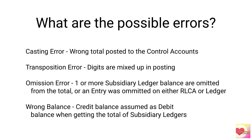Next is omission error, where one or more subsidiary ledger balances are omitted from the total, or an entry was omitted on either the RLCA or subsidiary ledger. This applies when we totaled all the individual customer accounts except for one because it was overlooked, or there is an entry in the RLCA or individual account that we didn't post because it was overlooked.